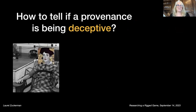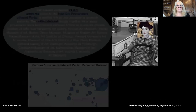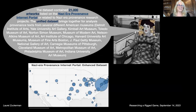How can you tell if a provenance is being deceptive? In 2020 and 2021, a team of volunteers at two Swiss GLAM Hacks got together and created a little tool simply to count words. The dataset we used was taken from the public Nazi-era provenance internet portal — 21,000 artworks. Those didn't have provenance text, so to enhance that dataset I went and got provenance from various art museums. It's an enhanced dataset from NEPIP. This is Ray Nowler, one of our team members who did a lot of the coding.